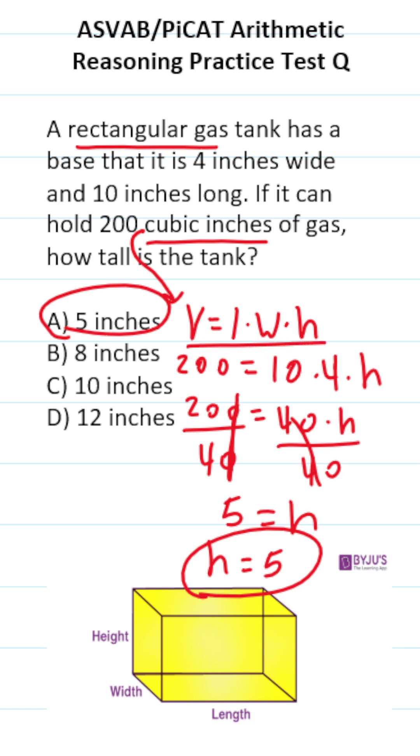Again, as long as you know this formula to find the volume of a rectangular prism, this problem is pretty straightforward.